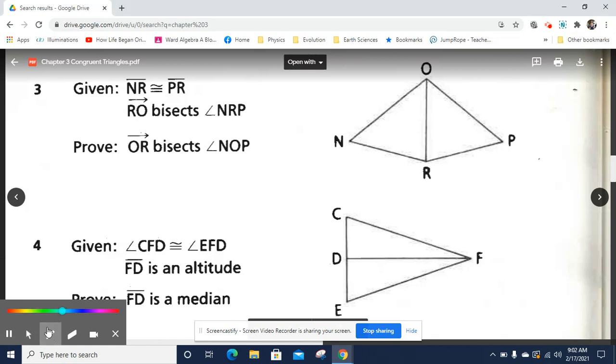So we'll start off by identifying the things that we know. We know NR is congruent to RP. We also have been told that RO bisects angle NRP. If that is true, then we know that by definition of an angle bisector, these two angles are congruent.